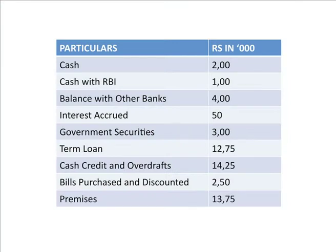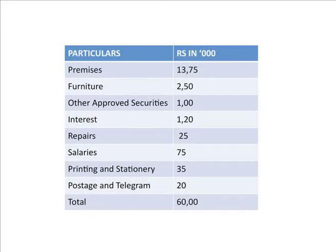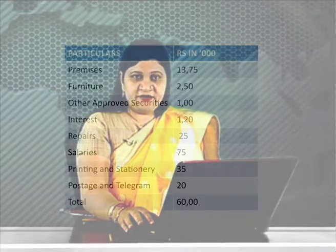Premises will go in schedule 10 for fixed assets; it is 13,75,000. Furniture will again be part of schedule 10, fixed assets. Other approved securities 1 lakh will go in schedule 8, that is investments. Interest on the debit side is an expense and will go under schedule 15. Repairs, salaries, printing stationery, and postage are operating expenses and shall form part of schedule 16. So we have analyzed the debit side of 60 lakh.